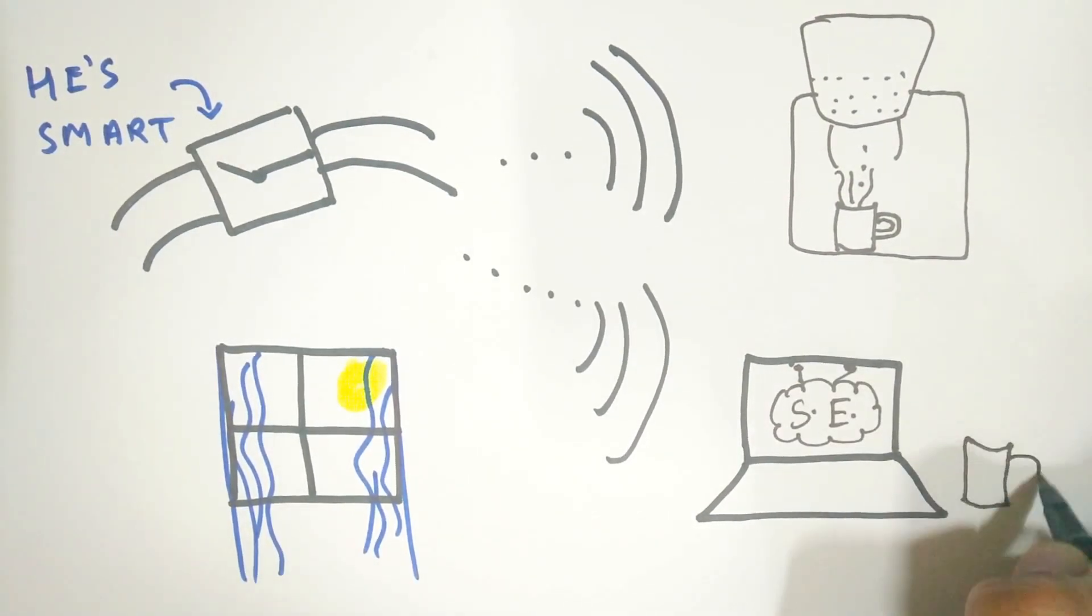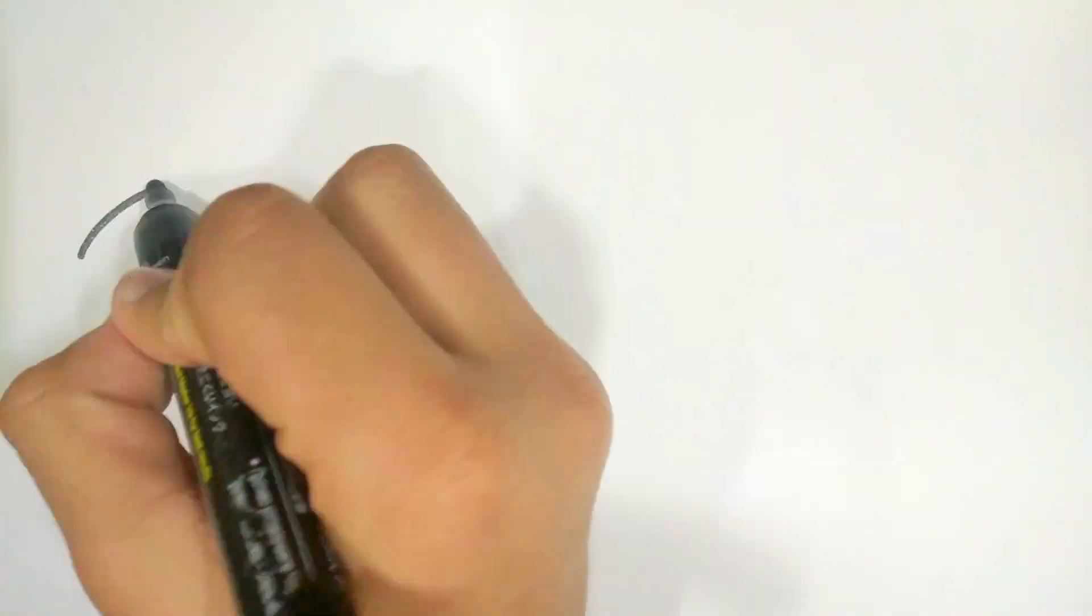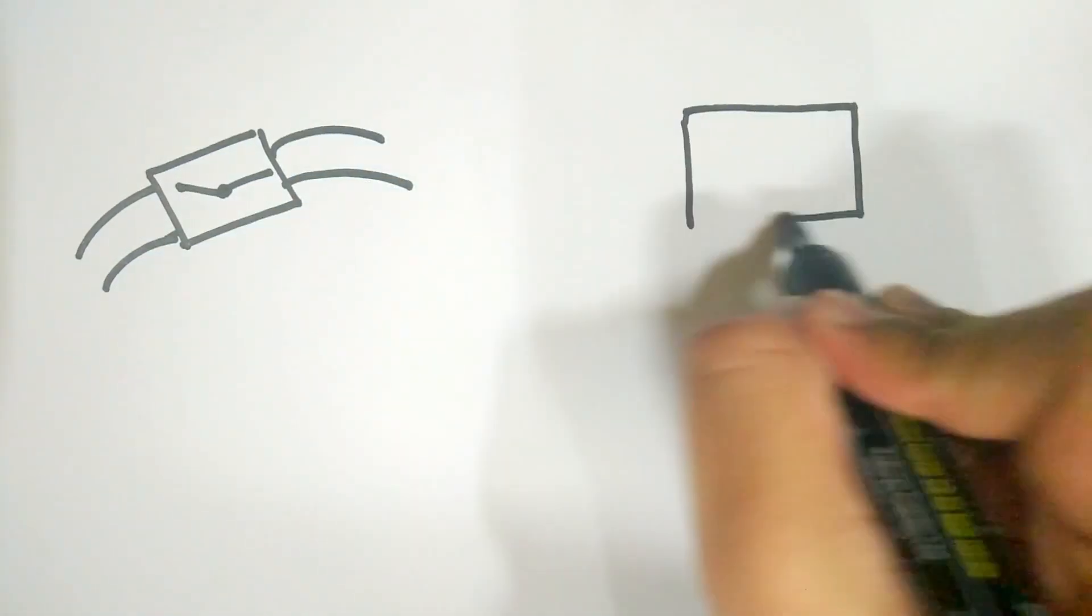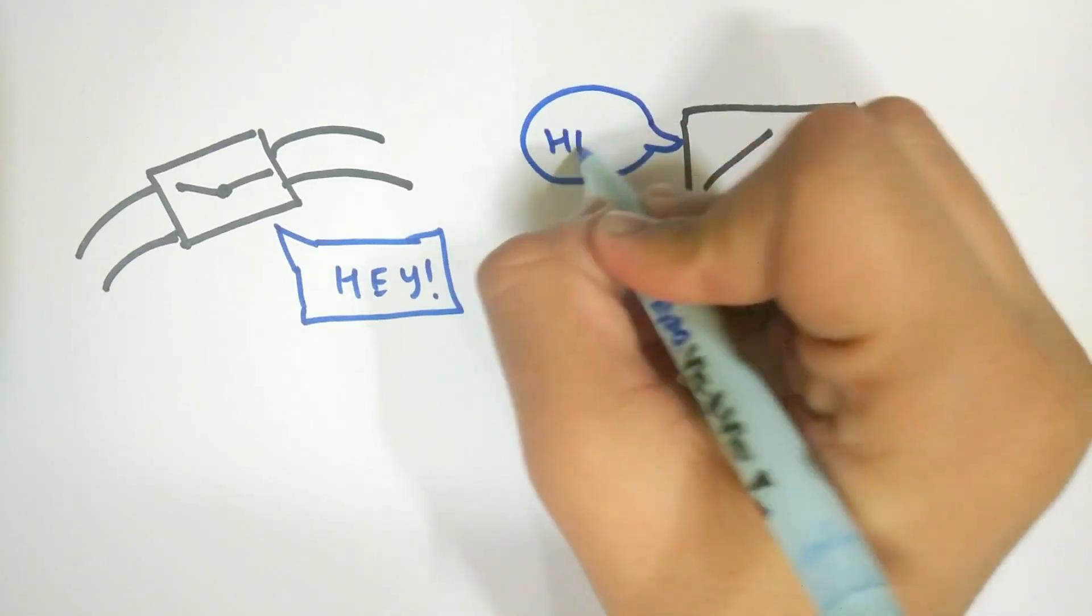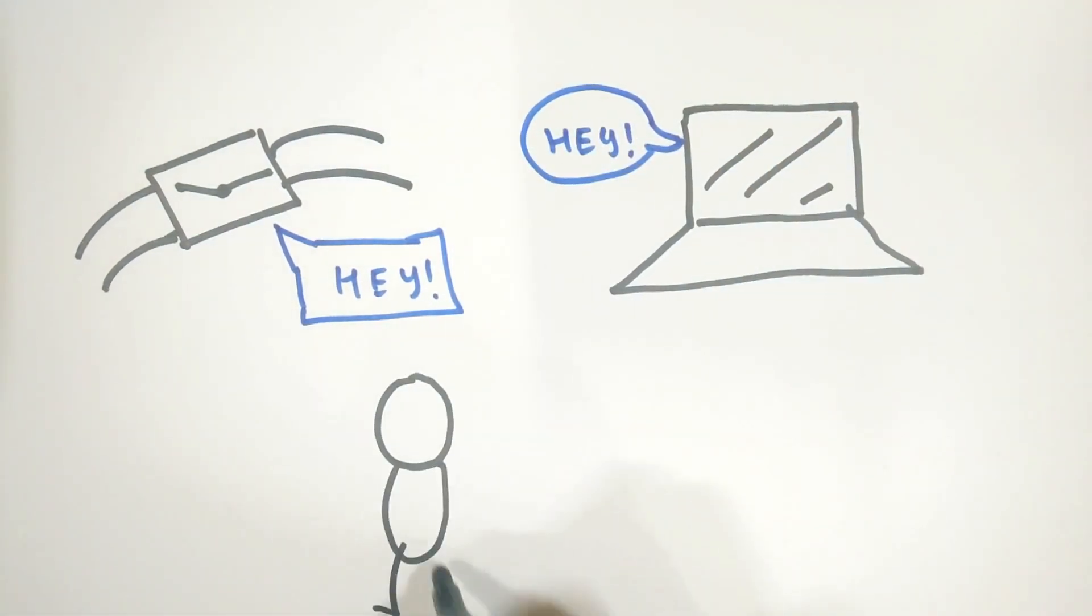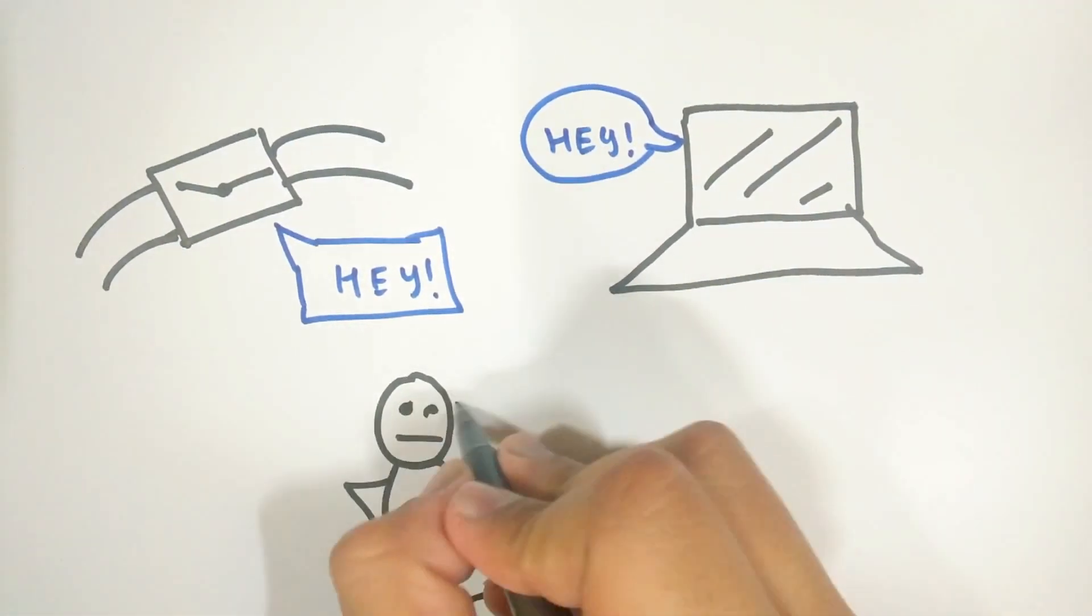Things communicating with each other can lead to an easy daily life for people. You no longer have to tell things what to do. Things gather information and know what to do without your instructions.